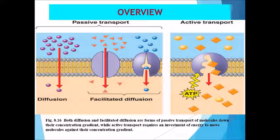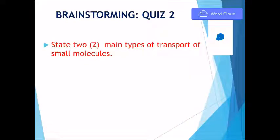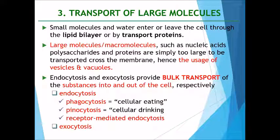In summary, transport of small molecules involves passive transport and active transport. Passive transport is the movement of molecules from high to low concentration gradient without using energy across the selectively permeable membrane, and includes diffusion and facilitated diffusion. Active transport refers to the movement of molecules against their concentration gradient using energy to transport molecules across the plasma membrane. You should now answer the question: state the two main types of transport of small molecules.